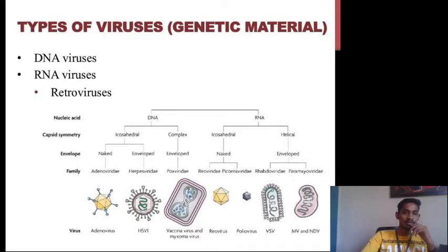Based on the type of nucleic acid, as you can see, there are two types: DNA and RNA. Then on the capsid symmetry, there are further two types of each group: icosahedral and complex.